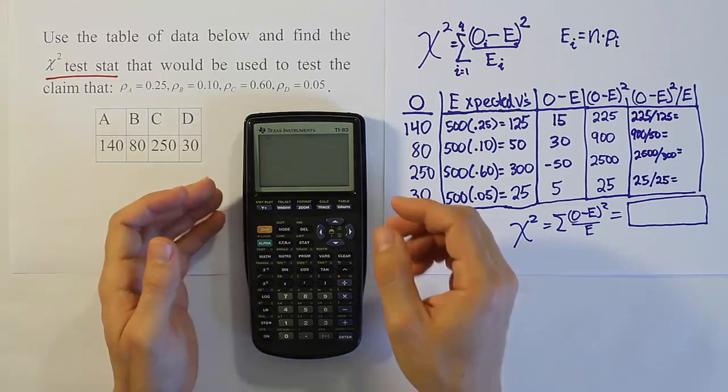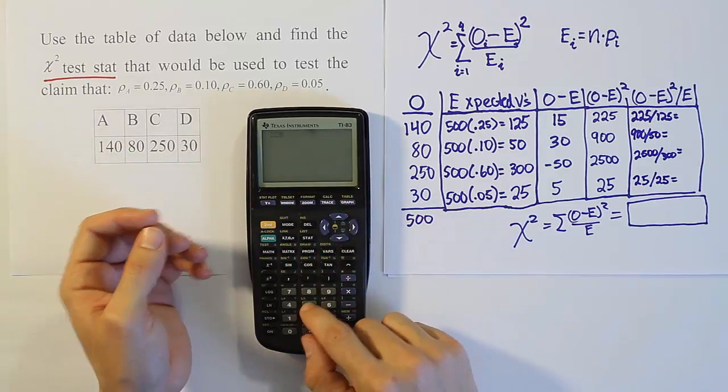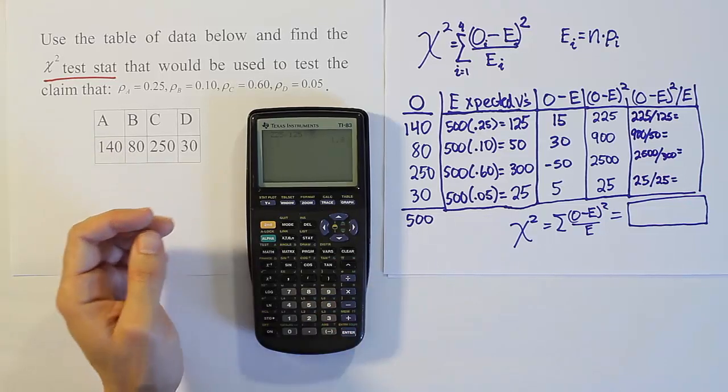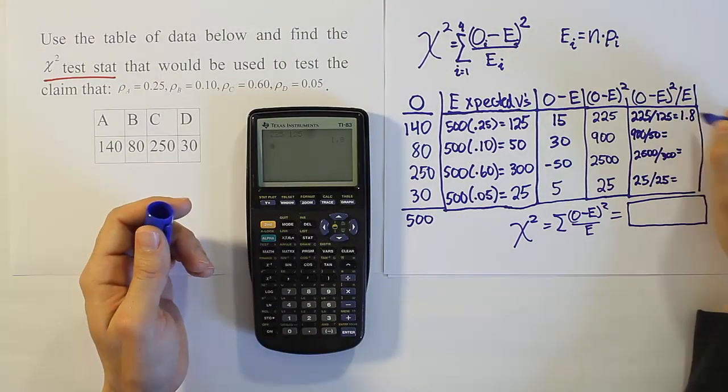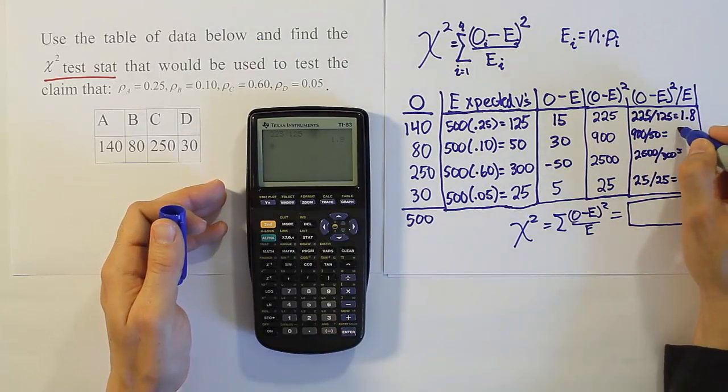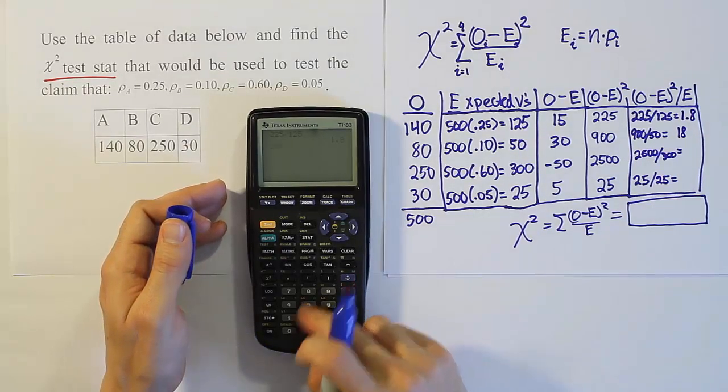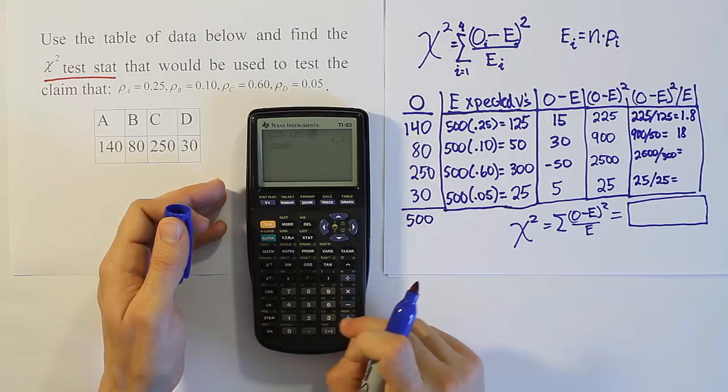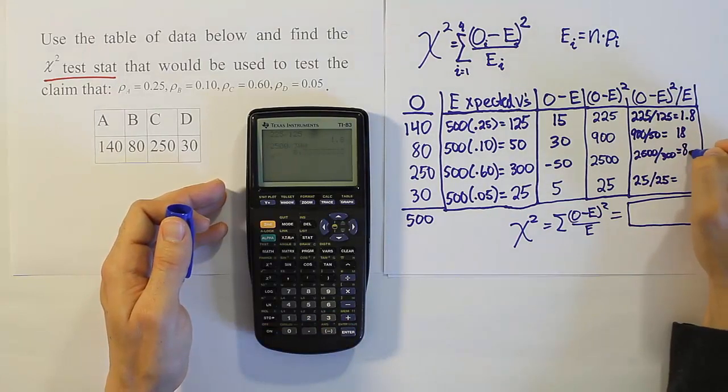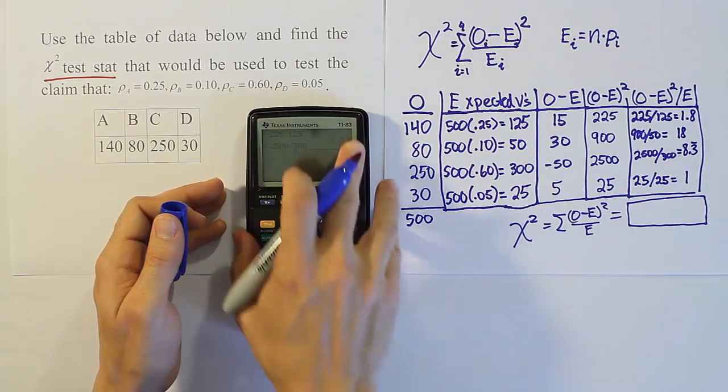Alright, let's work this out then. So, of course, we'll have 225 divided by 125 for the first cell. It gives 1.8. Then we'll have 900 divided by 50, which will be 18. Then we'll have 2,500 divided by 300. Get the answer 8.3 repeating. And lastly 25 divided by 25, which of course is 1.